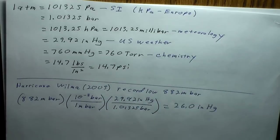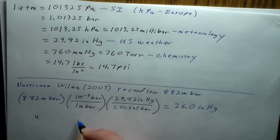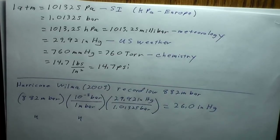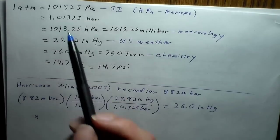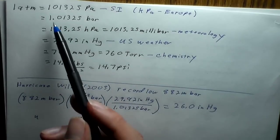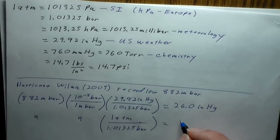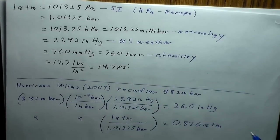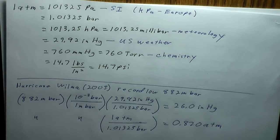We can also find what 882 millibars is in atmospheres — using 1 atmosphere per 1.01325 bar, that works out to 0.870 atmospheres. That's the pressure inside Hurricane Wilma. We'll end here and continue tomorrow.